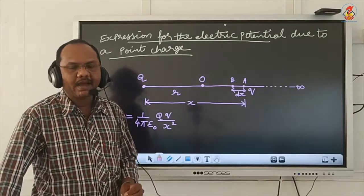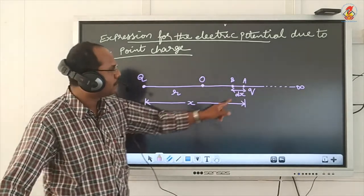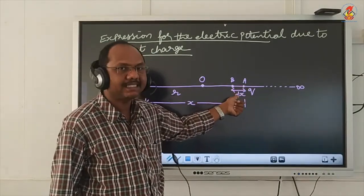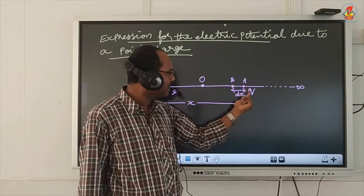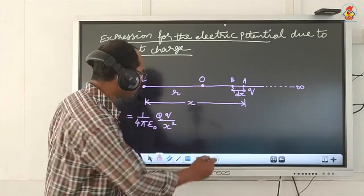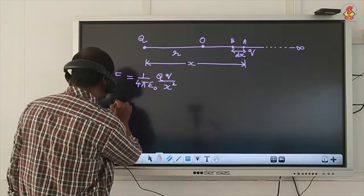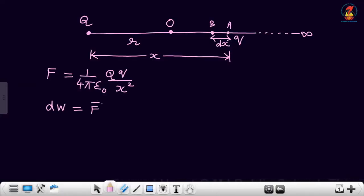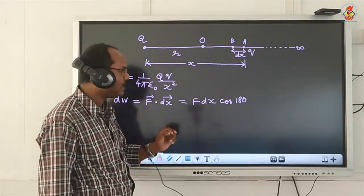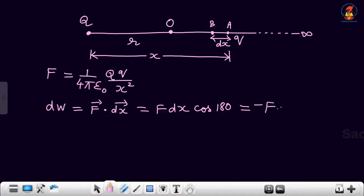Now we have to find the small work done to bring charge small q from A to B — a distance dx — moving it against the electrostatic force of repulsion. Therefore the equation is dW = F⃗ · dx⃗ = F dx cosθ. Here θ is 180° because we are moving the charge against the force of repulsion, so cos180° = −1, giving dW = −F dx.